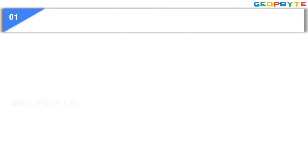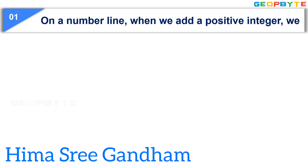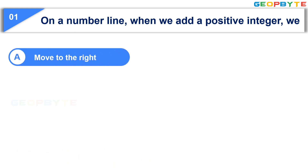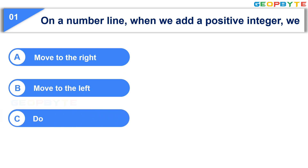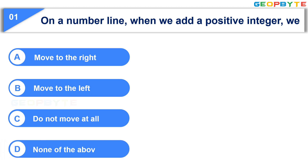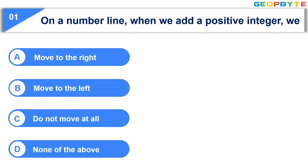The first question is: On a number line, when we add a positive integer, we — Option A: move to the right. Option B: move to the left. Option C: do not move at all. Option D: none of the above. Your time starts now. Your time is up. And the correct answer is Option A: move to the right.